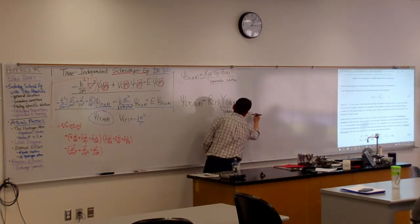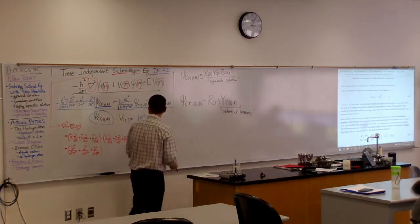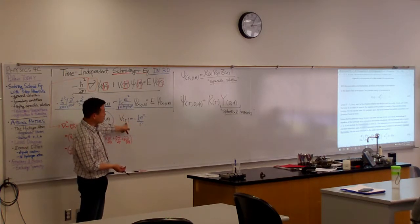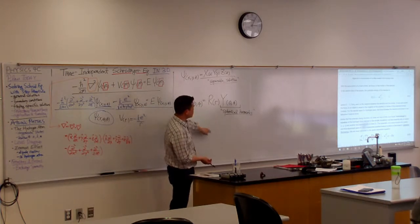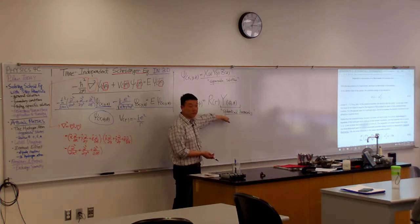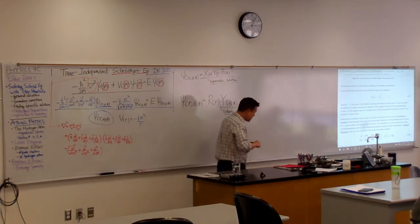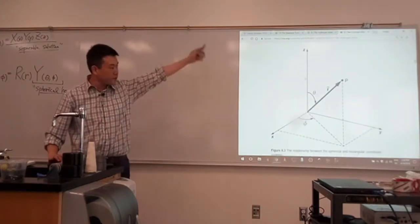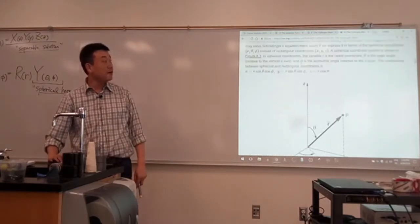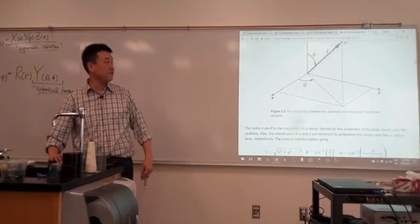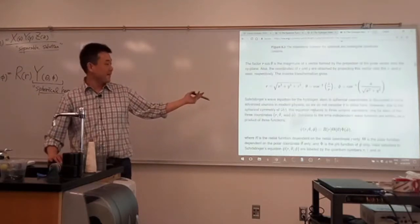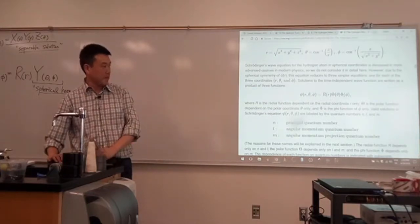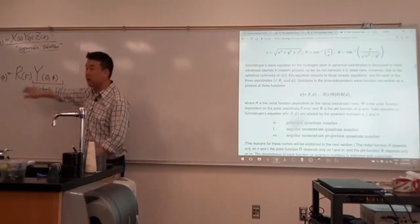So let me just give you the name so that you can look it up or whatever. This is called spherical harmonics. And it actually occurs essentially any time you are dealing with central potential that depends only on R, then you can separate out your solution and the angular portion becomes a spherical harmonics.